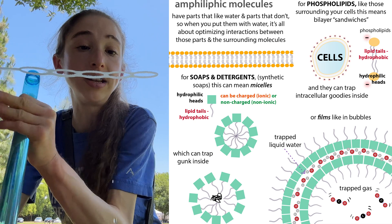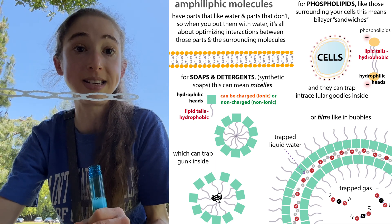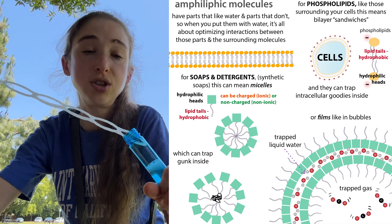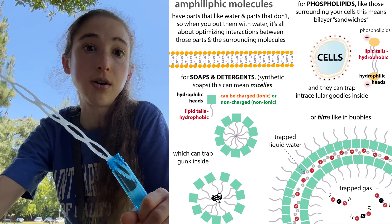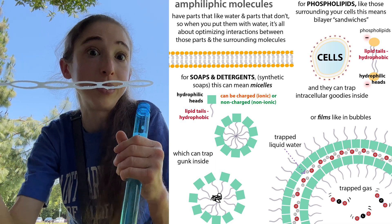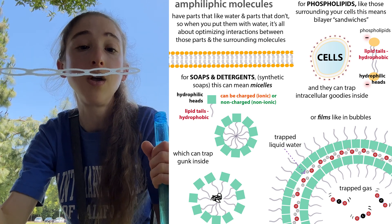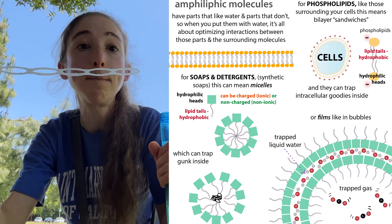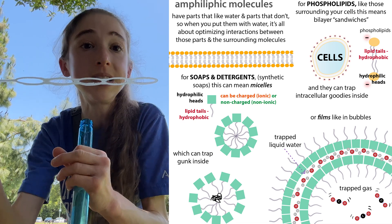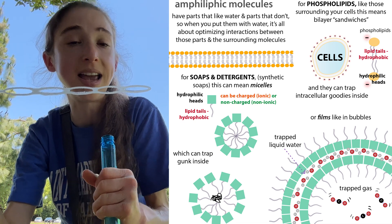Now what happens when you blow into them? You're introducing air. Normally, if you were just to blow into a layer of water, it'd be hard to form a layer of water, but even if you could, it wouldn't expand to form a bubble. We're able to get these bubbles with the soap film because these soaps act as surfactants, or surface-acting agents, meaning that they lower surface tension.